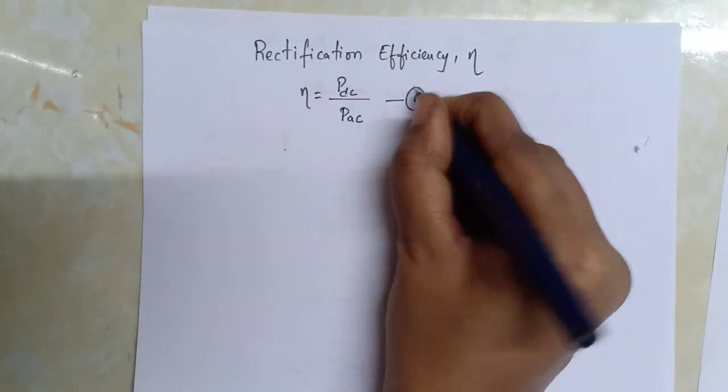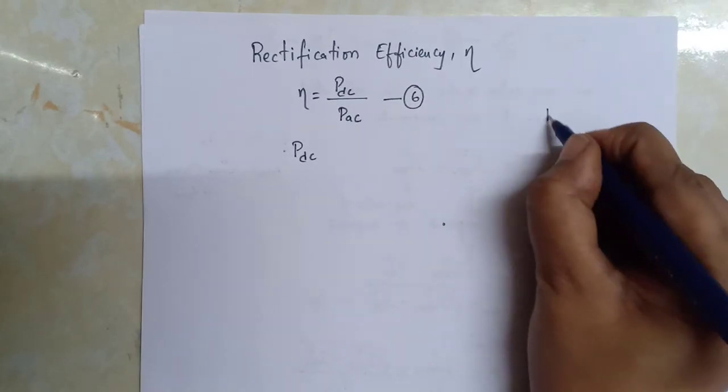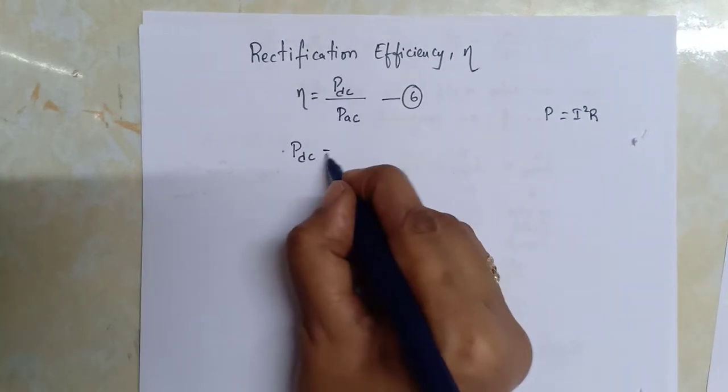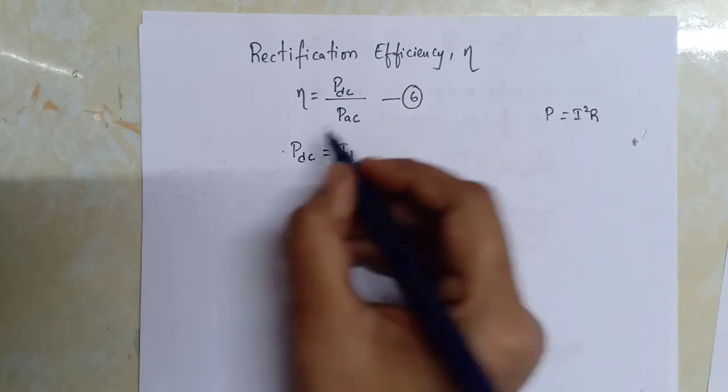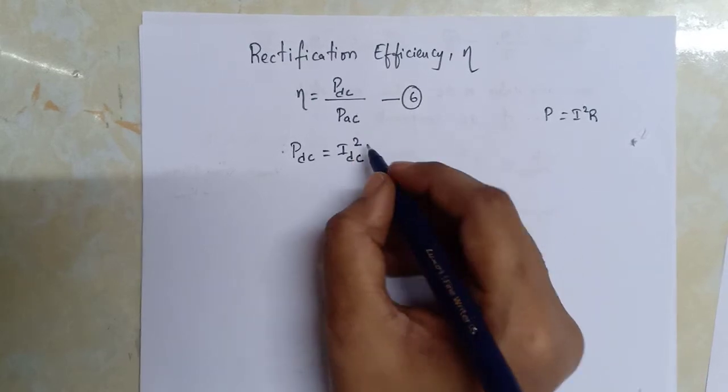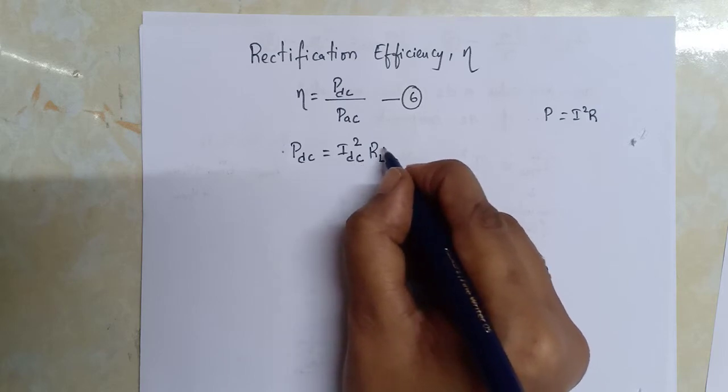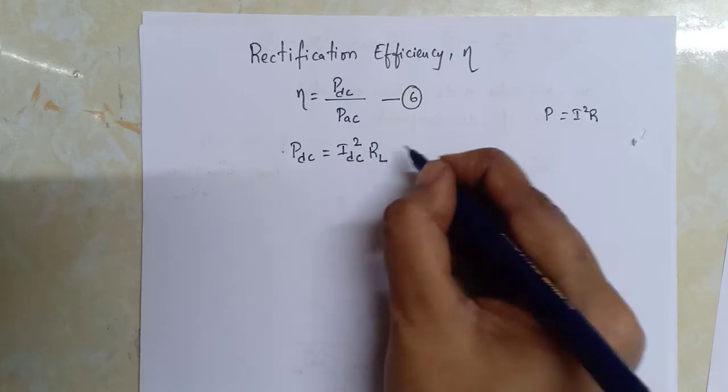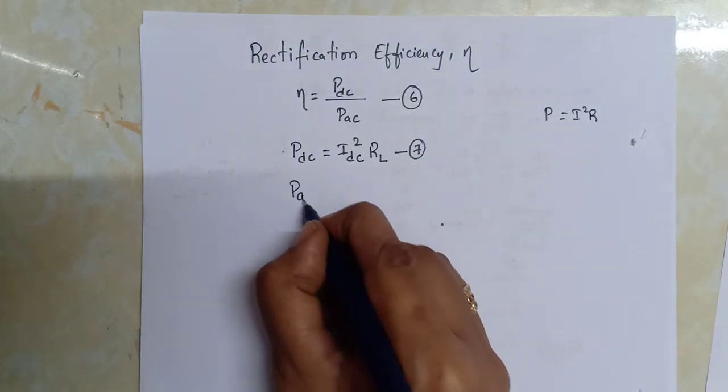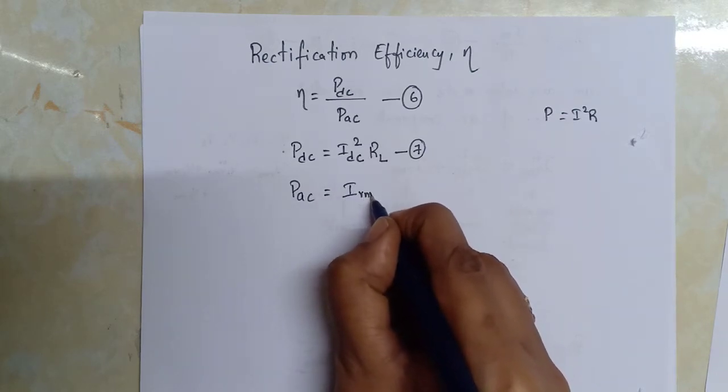The power we know is written as P = I²R, so DC power delivered to the load is written as IDC² into RL. Take this as equation 7. Then the AC power from the input, because the AC power is the total power.